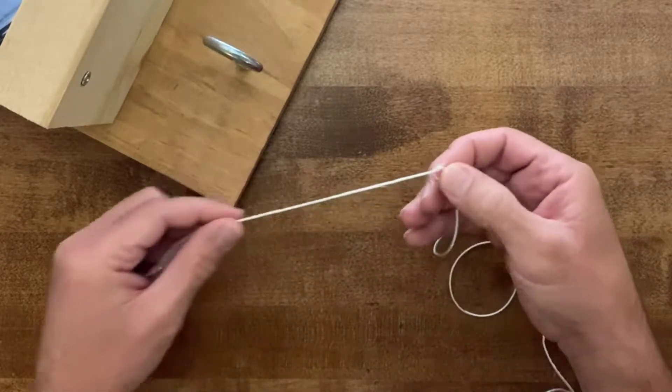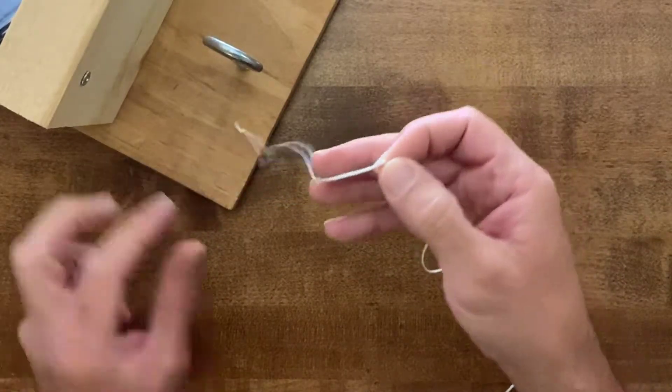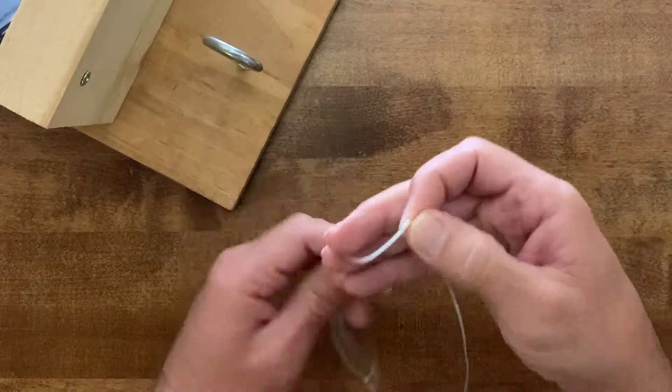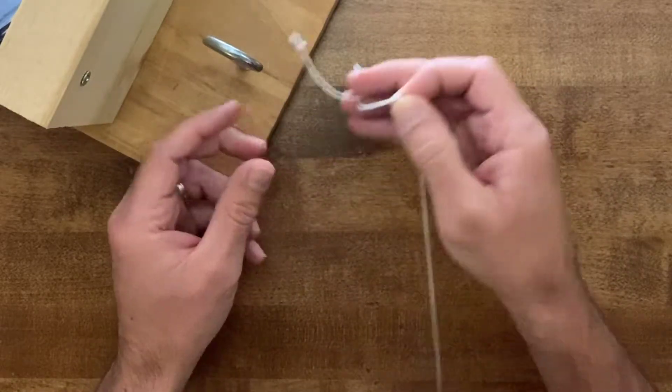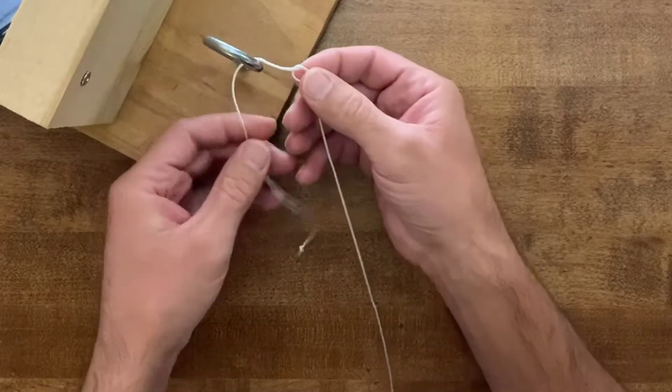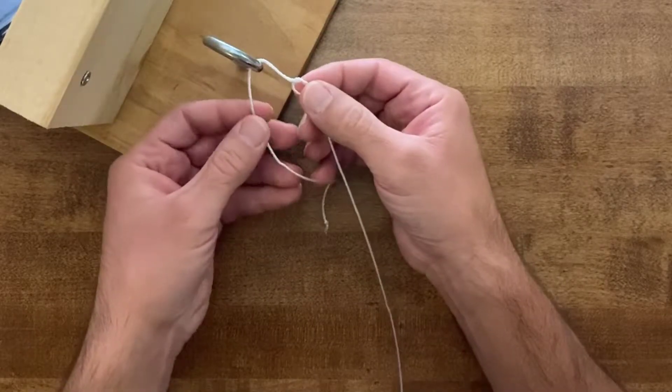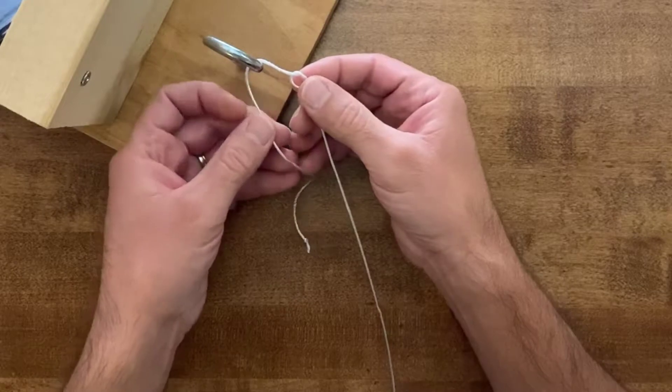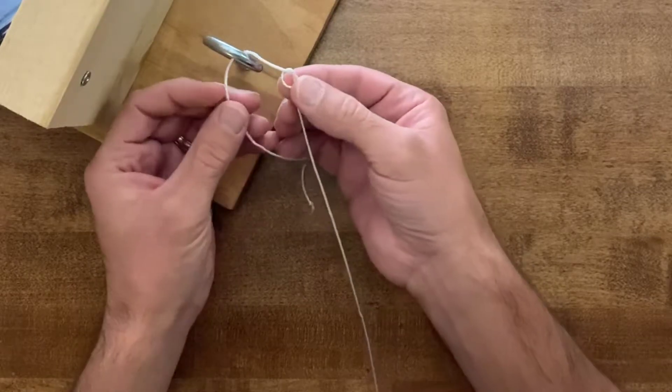Now I'm of course using this thicker line just for demonstration purposes. You can tie this in either monofilament or in braid. The difference will be the number of loops that we're going to make, the number of turns we're going to make here in a bit.